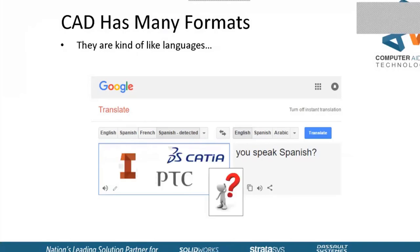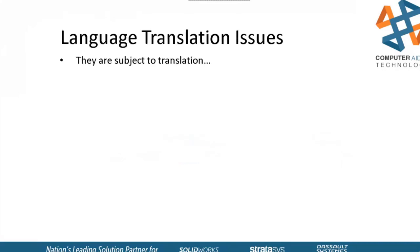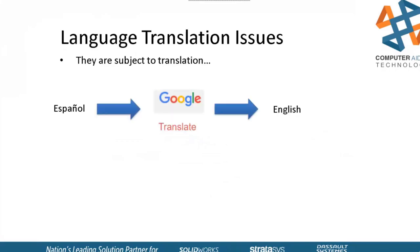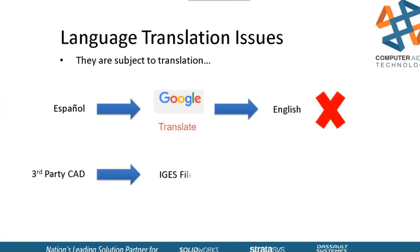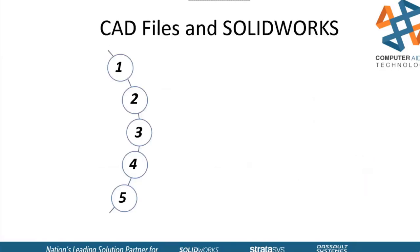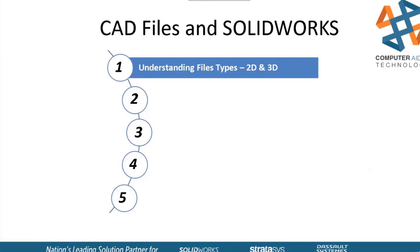Think of it the same with CAD software. If we're going from a package like Creo or CATIA or Inventor over to SolidWorks, we need some kind of software or some means of translating that information. As we take translations, they're subject to things like the translator itself, depending how well an interpreter is going to interpret — the same thing with third-party CAD software to a neutral file and into SolidWorks. I want to show you a bunch of tools that we have to work with. I've got about five different sections.